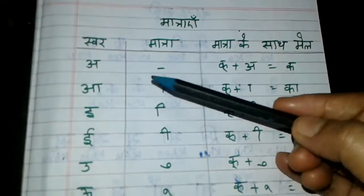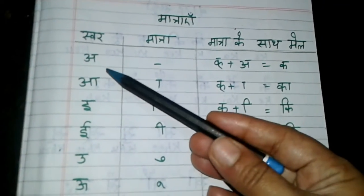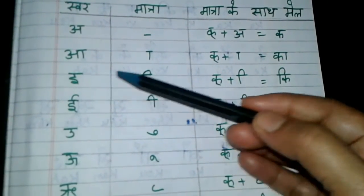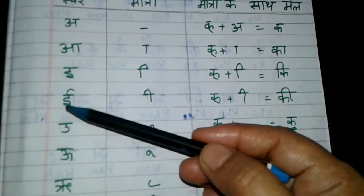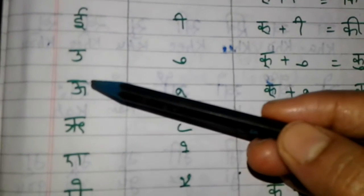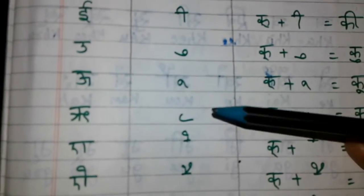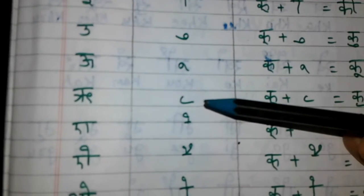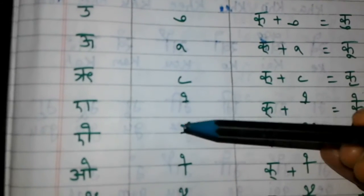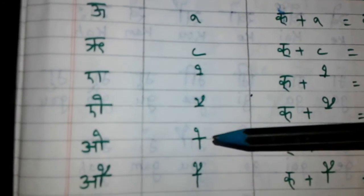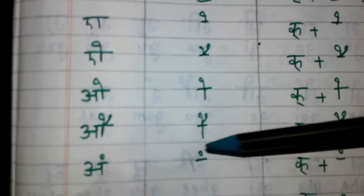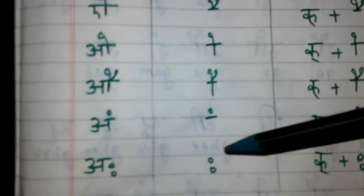Friends, do you understand the matras? Let me recap: 'a' has no matra; 'aa' matra; 'i' matra; 'ii' matra; 'u' matra; 'uu' matra; 'ru' or 'ri' matra; 'e' matra; 'ai' matra; 'o' matra; 'au' matra; 'am' matra; 'aha' matra.